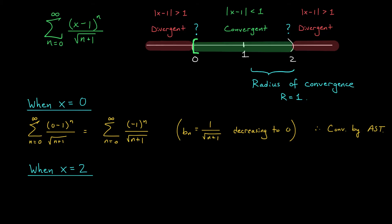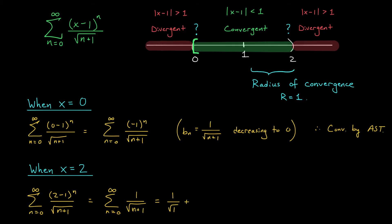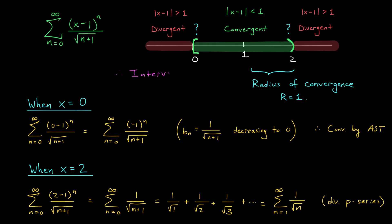What about when x = 2? Plugging in gives the sum of (2−1)^n over √(n+1), which simplifies to the sum of 1/√(n+1). This looks like a p-series with p = 1/2, so it will likely diverge. Writing out the terms — 1/√1 + 1/√2 + 1/√3 + … — this is exactly the p-series sum from 1 to infinity of 1/√n, which we recognize as a divergent p-series. So we cannot include x = 2 in our interval. Therefore, the interval of convergence is the half-open interval [0, 2).